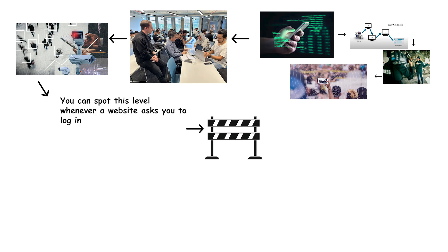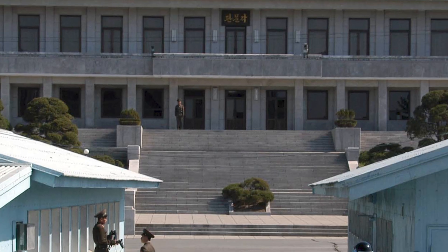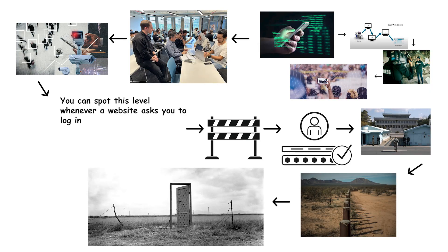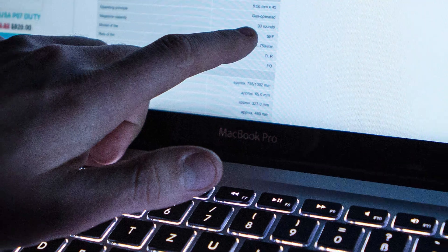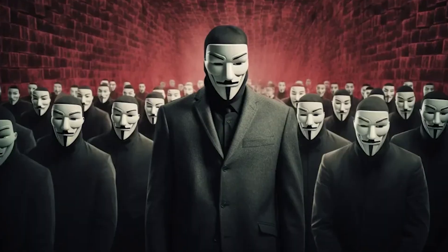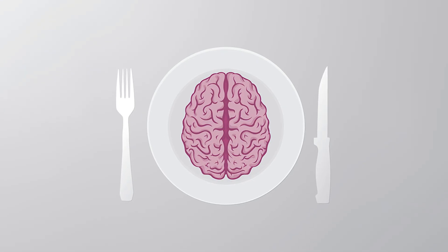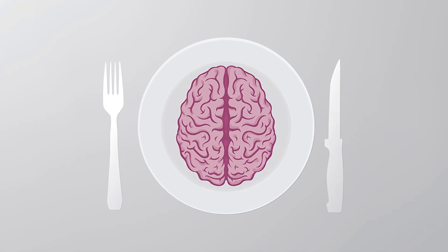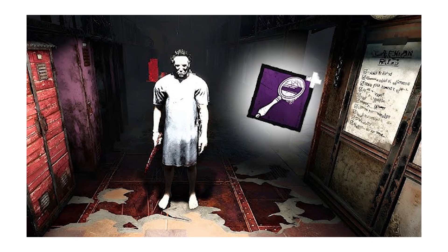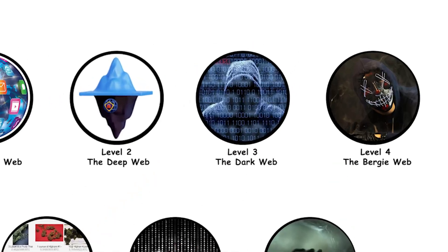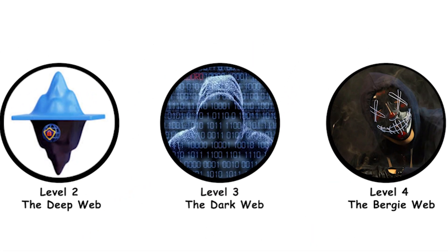That simple barrier — username, password — is the border between the public and the deep. But beneath that border, there's another world, a darker one, where privacy turns into anonymity and anonymity starts to eat itself. Welcome to Level 3: the dark web.